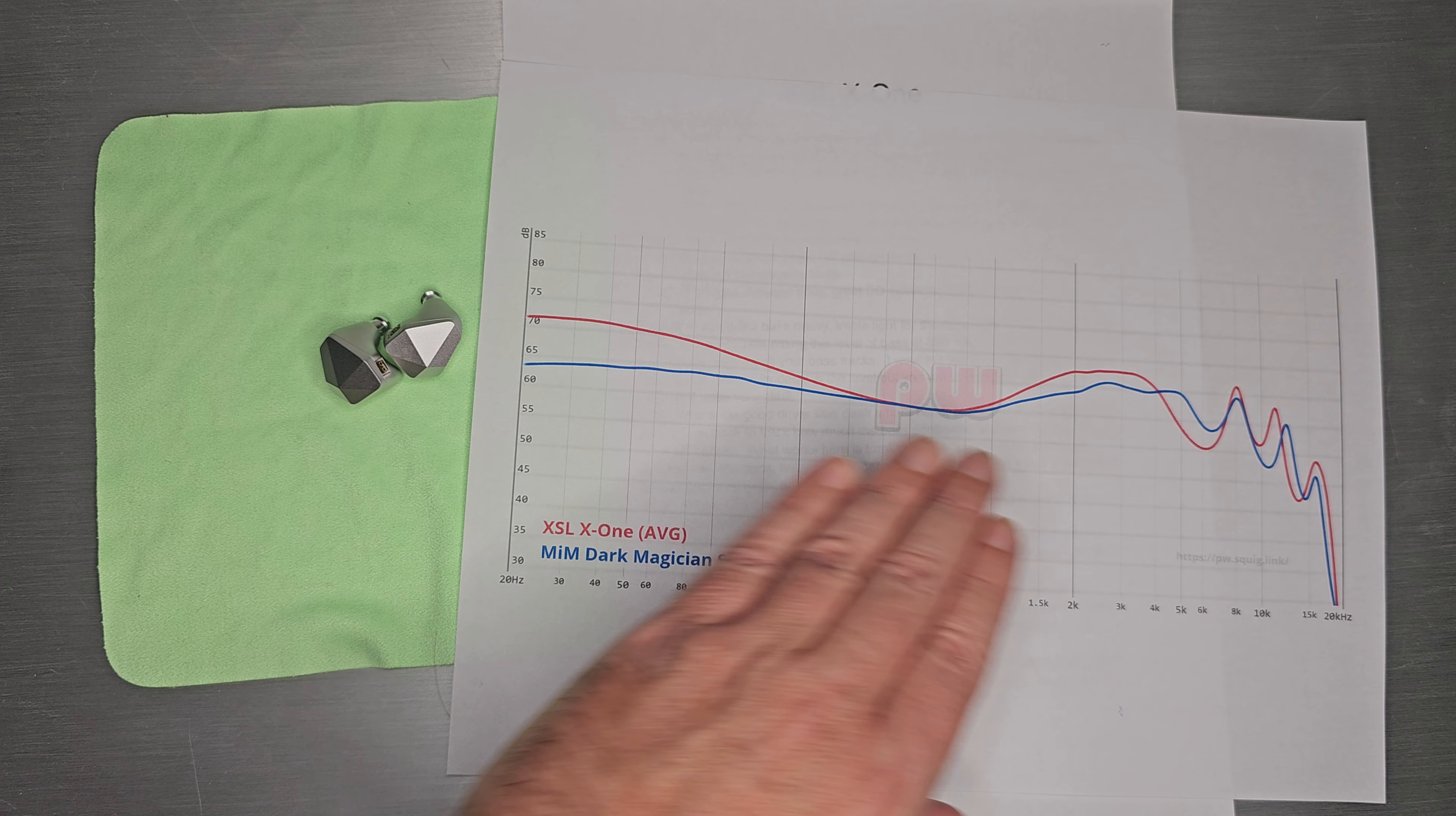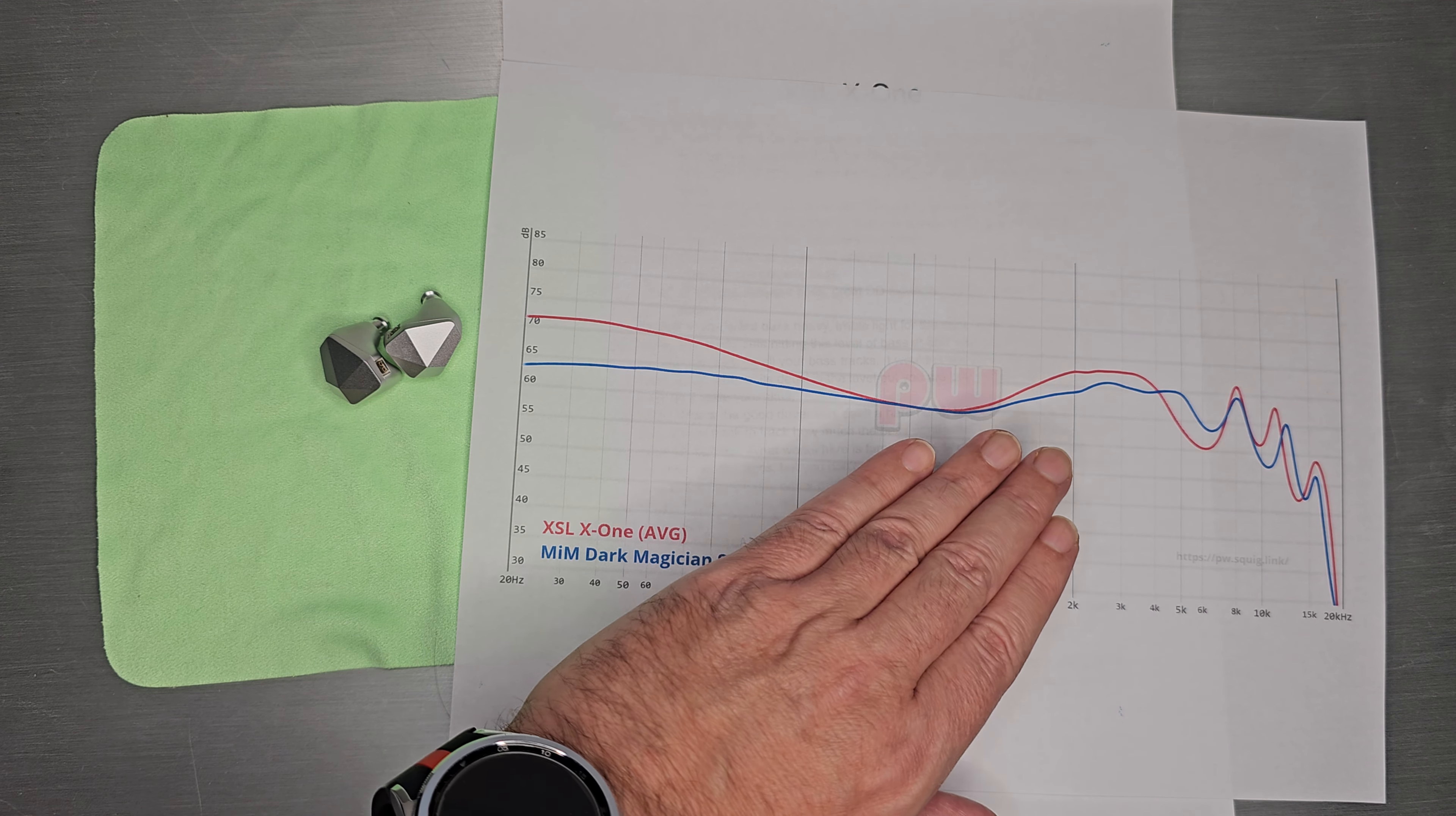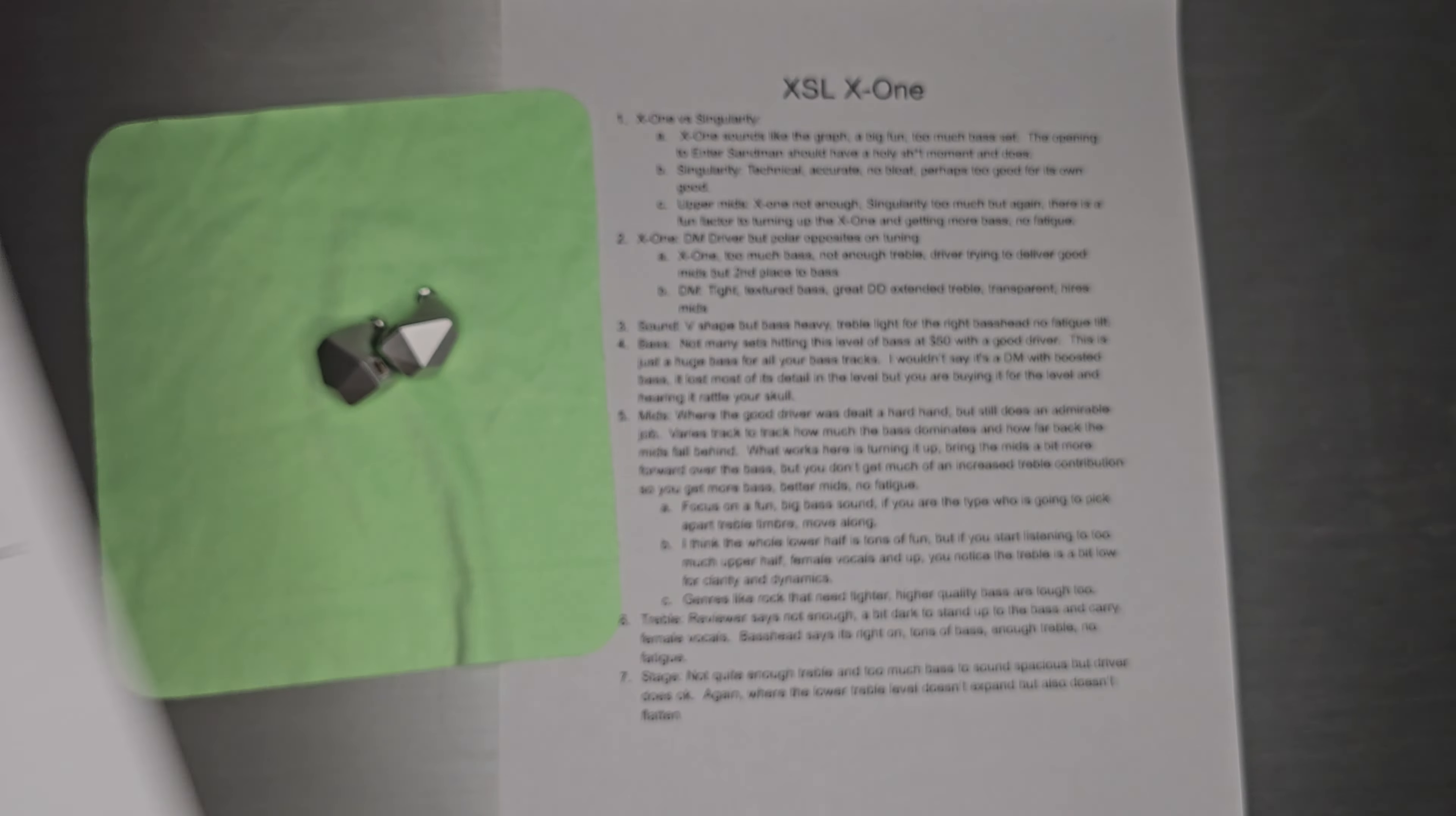When you V out, you essentially lose a lot of what made Dark Magician special, but it turns into something else special. It turns into a huge, booming, fun set. So I can't argue with what they did there.